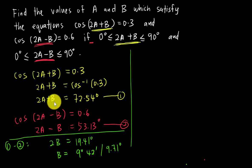If I want to find A, I already have B. I'll substitute B = 9.71° into the first equation. This gives 2A + 9.71 = 72.54.